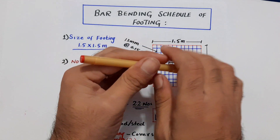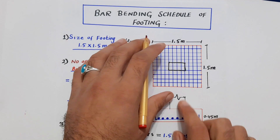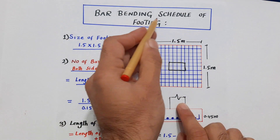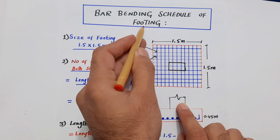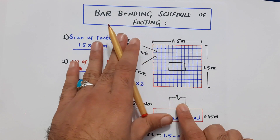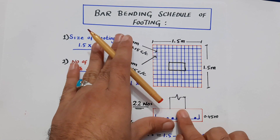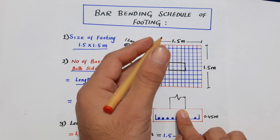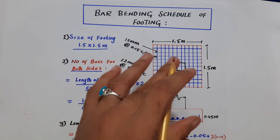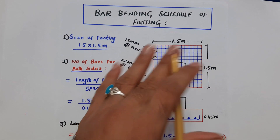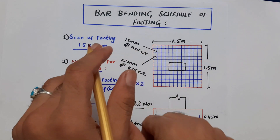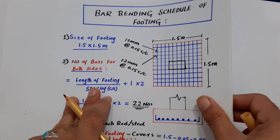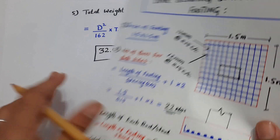Assalamualaikum beautiful people. Today's topic is the most important in civil engineering: bar bending schedule of RCC footing. Many students were asking about this topic, so I prepared this video. If this video is helpful for you, please like it. We have two pages on the bar bending schedule.